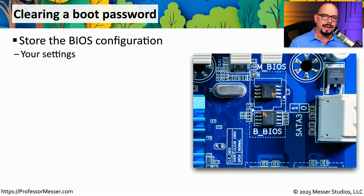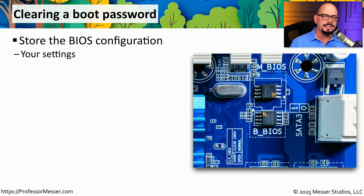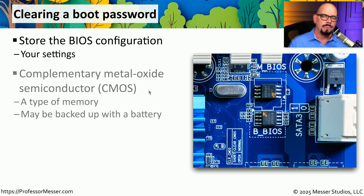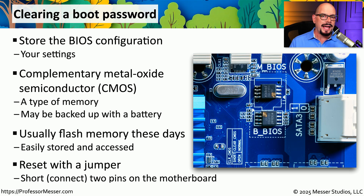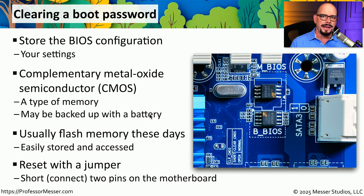Our BIOS software and the BIOS configuration settings are both stored on the motherboard. The BIOS software itself — what we sometimes refer to as the firmware — is stored in flash memory on the motherboard, and it's flash memory so that we can upgrade that BIOS if we need to. The BIOS configuration settings are often stored in separate flash memory also on the motherboard. When working with the BIOS, you may run across references to CMOS — Complementary Metal Oxide Semiconductor. This is a type of memory we used to use with the BIOS, but these days most BIOS configurations are simply flash memory. Before the advent of flash memory, most configurations were stored in volatile memory on the motherboard, kept active with a battery. These days, those BIOS configurations are stored in non-volatile flash memory, so they don't need a battery backup to maintain that configuration.